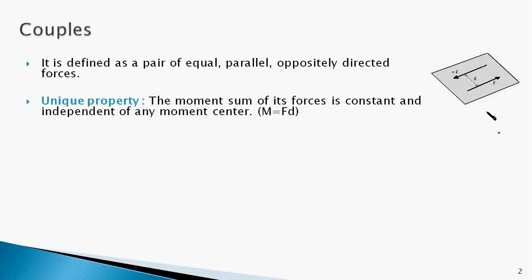Couples have a unique property: the moment sum of its forces is constant and independent of any moment center, and the moment magnitude is equal to FD. This means you could take any arbitrary point on the plane, find the moment of each force about that point, and the net moment magnitude will always equal F times D — the magnitude of force times the distance between the lines of action of the two forces.